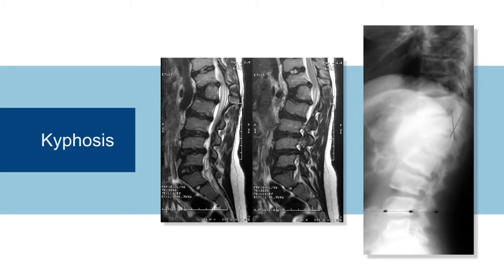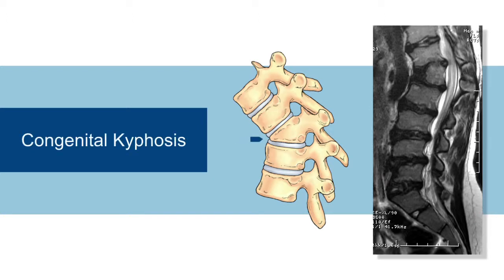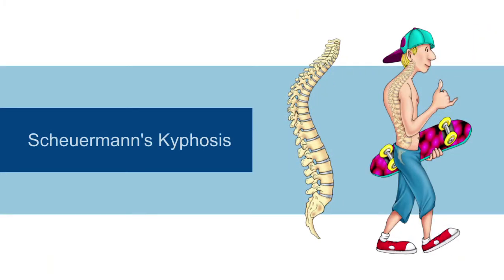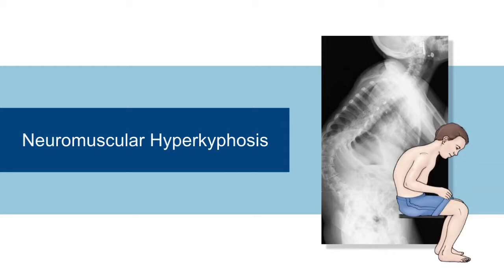Kyphosis is an exaggerated forward bending of the spine during growth. This deformity may occur throughout the entire spinal column. When the kyphotic deformity results from an abnormal bone formation, it is called congenital kyphosis. A developmental kyphosis, known as Scheuermann's kyphosis, occurs in adolescence when the spinal growth plates do not grow properly, giving the spine an exaggerated rounded appearance. In children with abnormal muscle tone due to conditions such as cerebral palsy or muscular dystrophy, a severe type of kyphosis develops, called neuromuscular hyperkyphosis, leading to poor sitting balance and difficulty with feeding and wheelchair positioning.